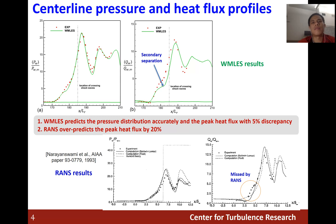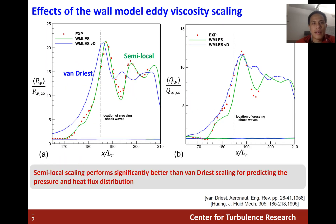We compare the centerline pressure and heat flux distributions with the experimental data. You can see that the wall-modeled LES predicts the pressure distribution accurately and the peak heat flux with only 5% discrepancy. The RANS simulation typically overpredicts the peak heat flux by 20%. We also study the effects of wall-modeled eddy viscosity scaling, and the semi-local scaling performs significantly better than van Driest scaling for predicting the pressure and heat flux distribution.